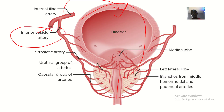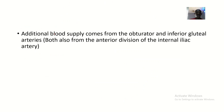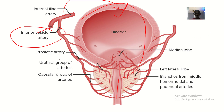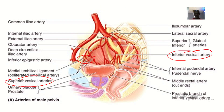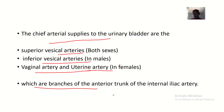Additional blood supply to the bladder comes from the obturator artery and the inferior gluteal artery. You can see the inferior gluteal artery here on the specimen. The obturator artery is not actually labelled here, but both serve as additional blood supplies to the urinary bladder.